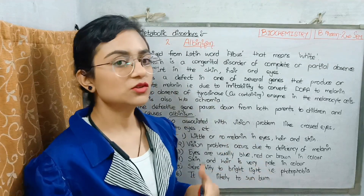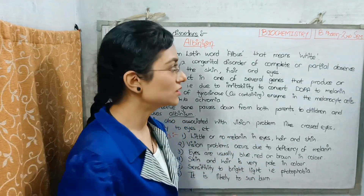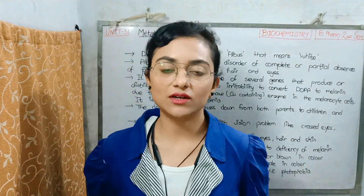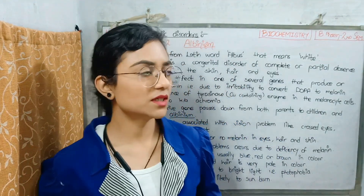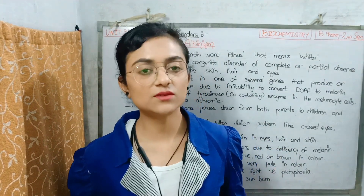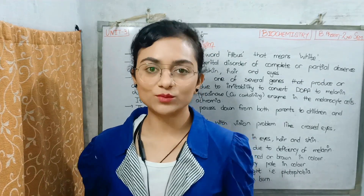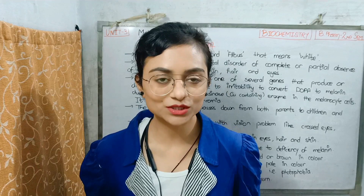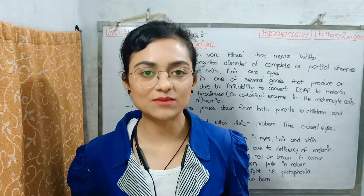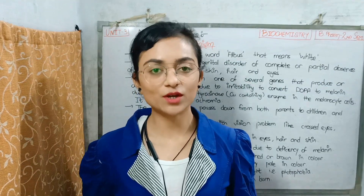These two — phenylketonuria and albinism — are metabolic disorders in the catabolism of phenylalanine and tyrosine. We have two other disorders which we will cover in the next video. The notes are linked in the description box, you can download them from there. Thanks for watching this video. If you like this video, please hit the like button, subscribe to my channel Gyan Ki Garibi, and hit the bell icon to get notifications for new videos. See you in the next video. Bye.